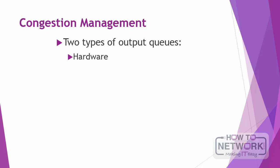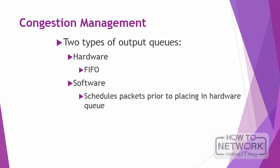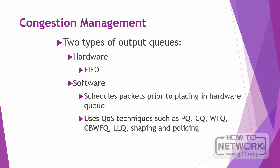There are two types of output queues available on routers: hardware and software. The hardware queue simply uses FIFO — first in, first out — but the software queue schedules packets first and then places them in the hardware queue. The software queue is only used during periods of congestion, and it uses QoS techniques such as priority queuing, custom queuing, weighted fair queuing, class-based weighted fair queuing, low latency queuing, and traffic shaping and policing.